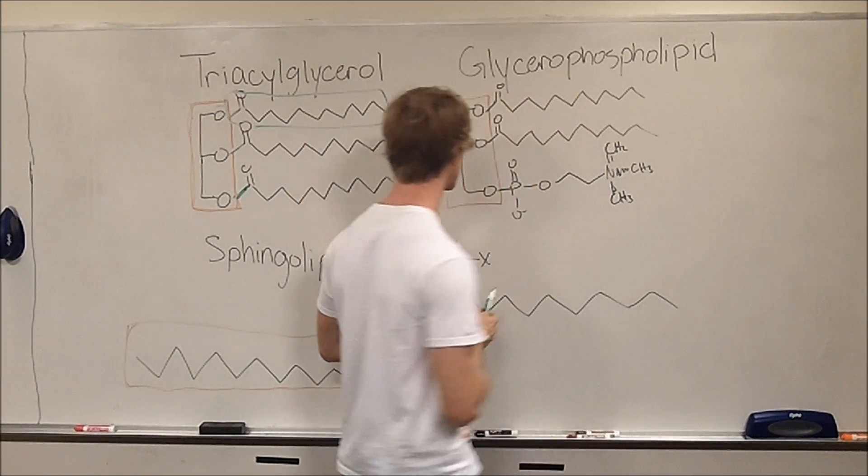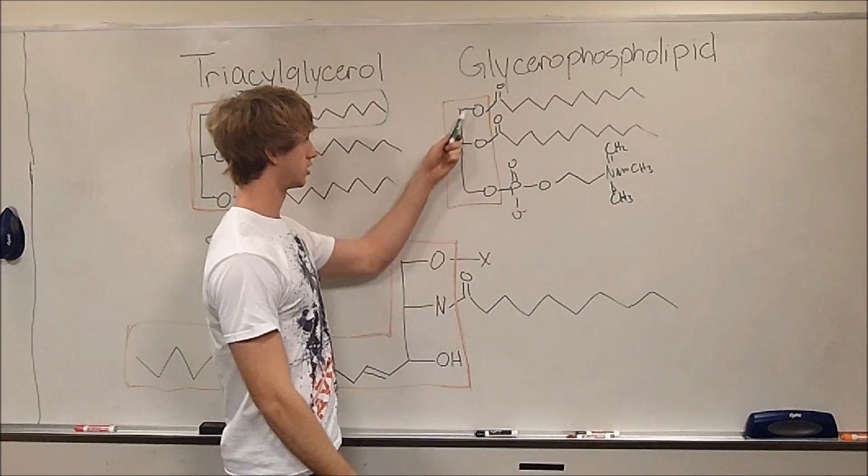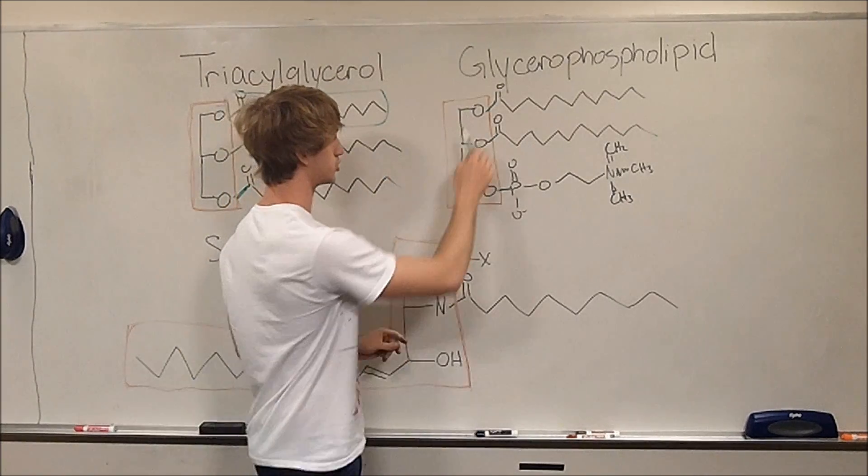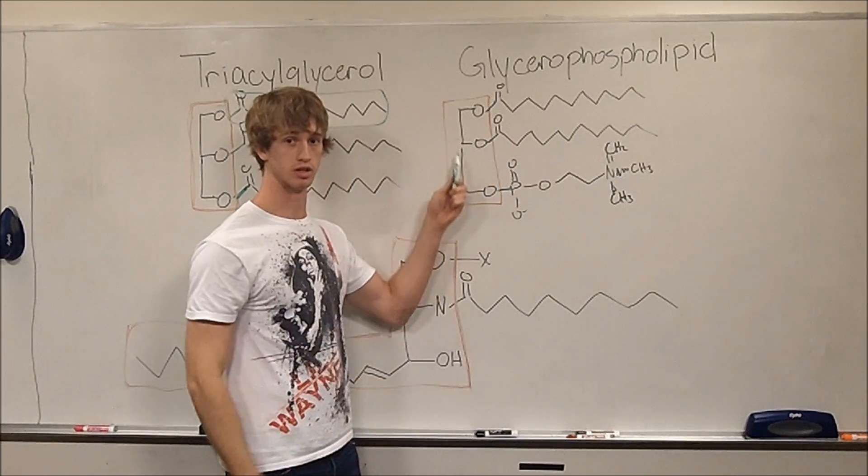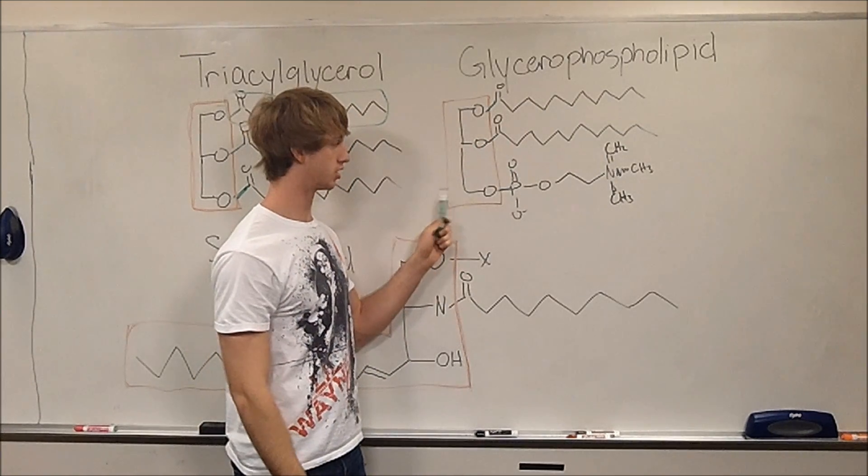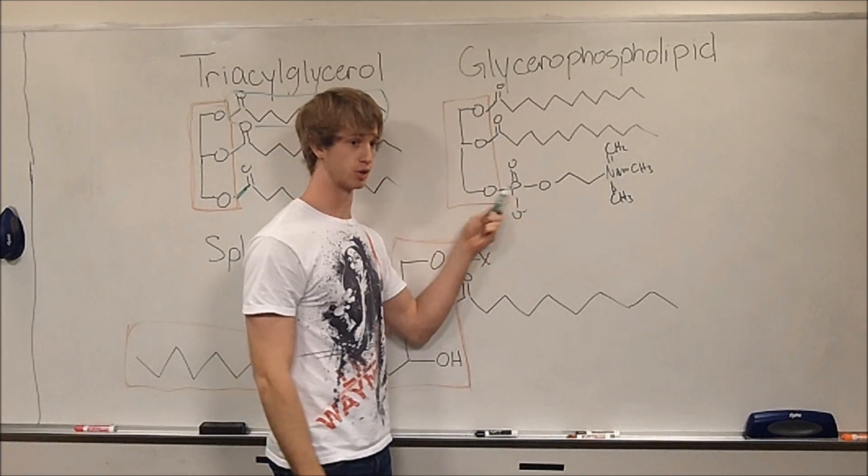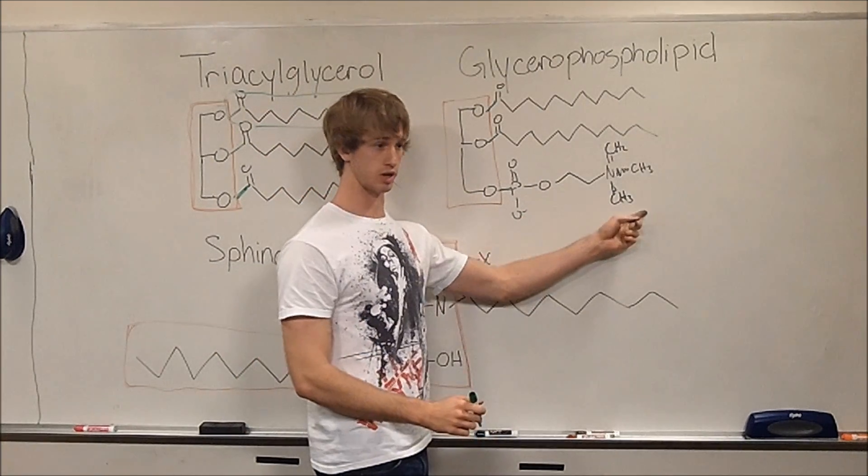Next we have glycerophospholipids, kind of a similar structure. There's this glycerol group here, and we have two fatty acids also ester-linked at positions C1 and C2. But the difference here is that at C3, there's this phosphate group, and attached to phosphate is usually some kind of functional moiety.